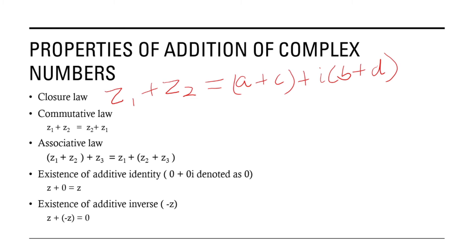The next one is the commutative law. According to this law, z1 plus z2 is equal to z2 plus z1. The third law is the associative law. Here, z1 plus z2, all added to z3, is equal to z1 plus the sum of z2 plus z3. This is the associative law.